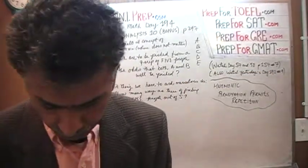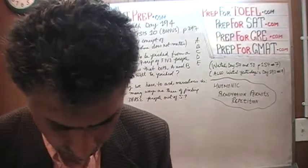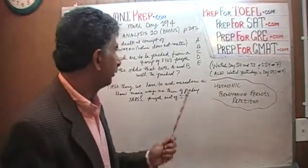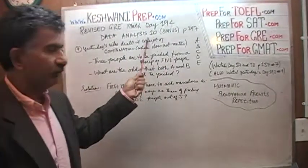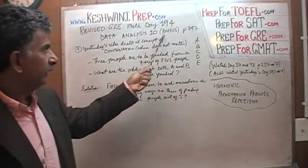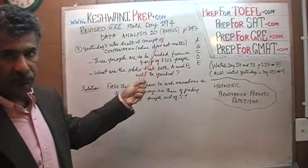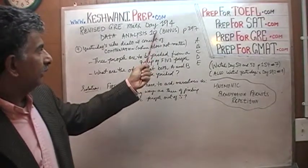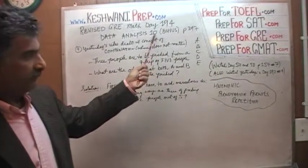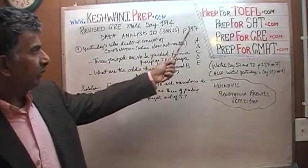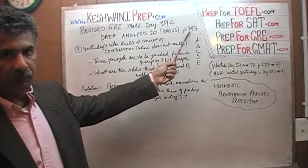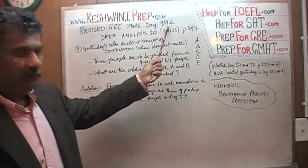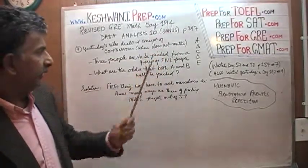The problem that we are about to solve is similar to problem number 10 that we solved yesterday. This is a bonus question — this problem is not in the book. Similar to problem number 10 from page number 297. Today is our lesson number 194.